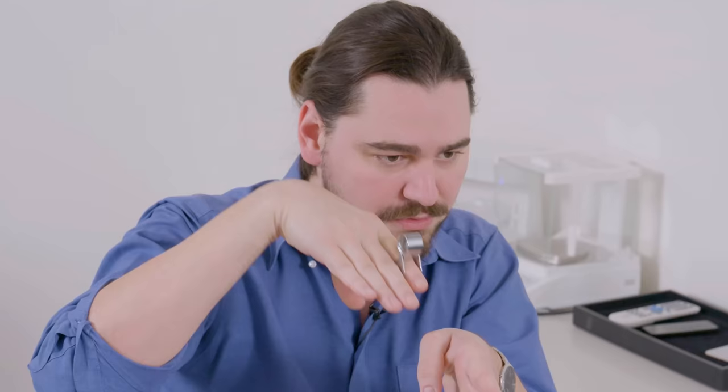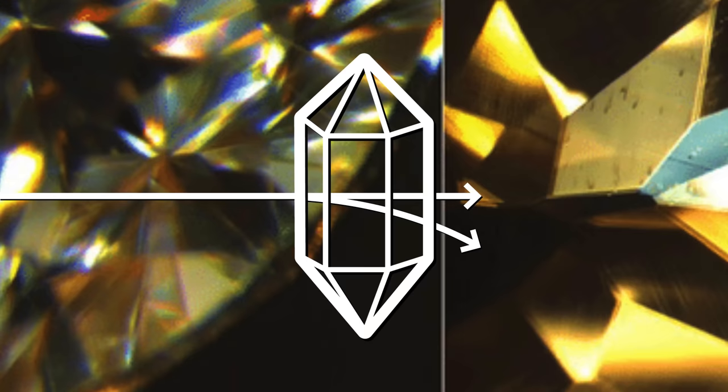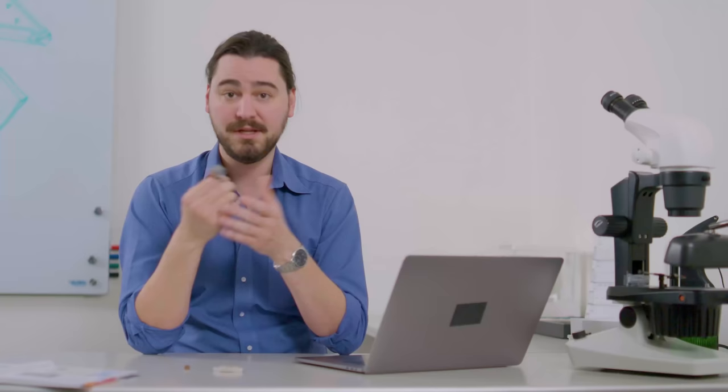So the last thing you can look for using your 10x loupe is the doubling of facet edges. You hold your loupe up to your cheek, you hold the diamond up, and you look at it kind of at an angle through the table, that's the top facet. And if you look through the diamond to the back side and you see the facet edges at the back and it looks like they're blurry or maybe doubling, then it's not a diamond. This is a property known as double refraction. That's where a beam of light goes into a stone, it gets split into two different directions, and it causes you to see double. Diamond doesn't do that. Plenty of stones do, and some of them do it so strongly that you can detect it just with a loupe.